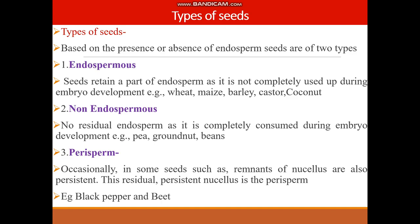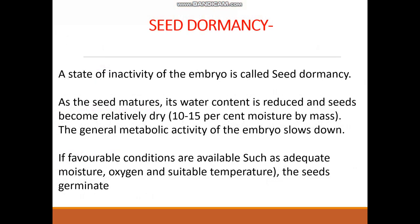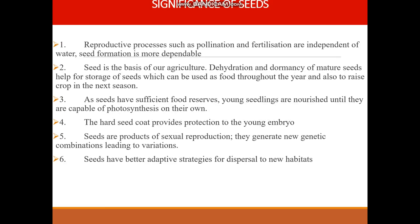Another type of seed involves perisperm. Here, occasionally the nucellus remains persistent, and such seeds are called perisperm seeds. Example: black pepper. All of you are familiar with seed dormancy — that is, seeds fail to germinate. That condition is called seed dormancy, and when conditions are favorable, the seeds start germination.